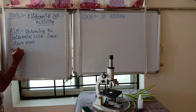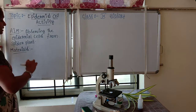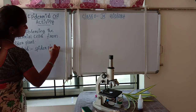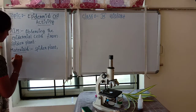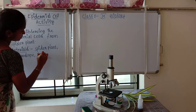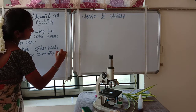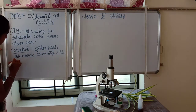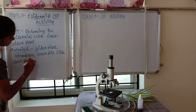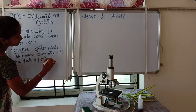What are the materials needed? The materials are: spider plant, microscope, cover slip, slide, watch glass, glycerin, and water.